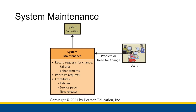When users have issues with an existing information system, that is where we get into maintenance. When I say system maintenance, what I mean is that we either fix existing issues in the system or we adapt the system when requirements change, because requirements will eventually change. Part of system maintenance is figuring out how to meet those changes in requirements within the existing system.